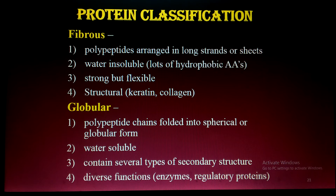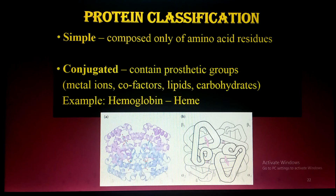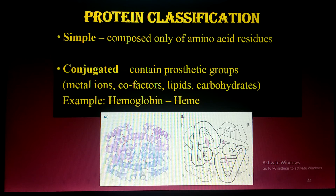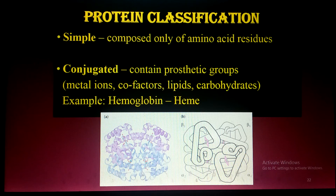Protein classification based on composition: simple proteins are composed of only amino acid residues. Conjugated proteins have other molecules attached — for example, glycoproteins have carbohydrate groups, lipoproteins have lipids, and metalloproteins have metal ion cofactors. In hemoglobin, for example, a heme (iron-containing) group is attached to the globin protein.